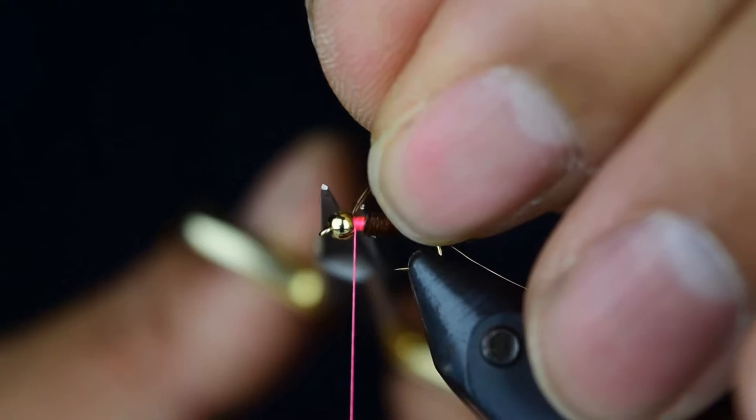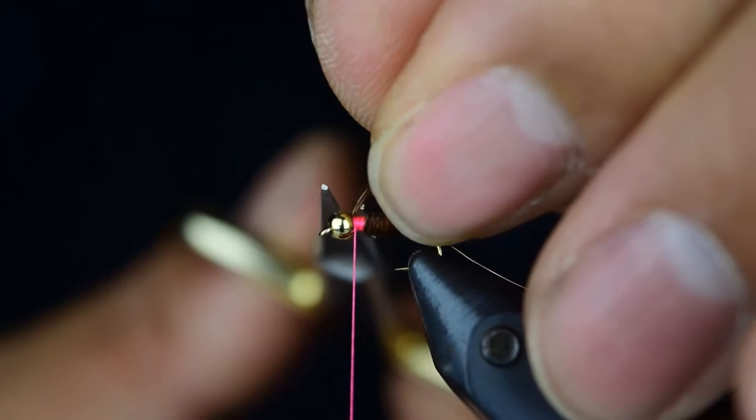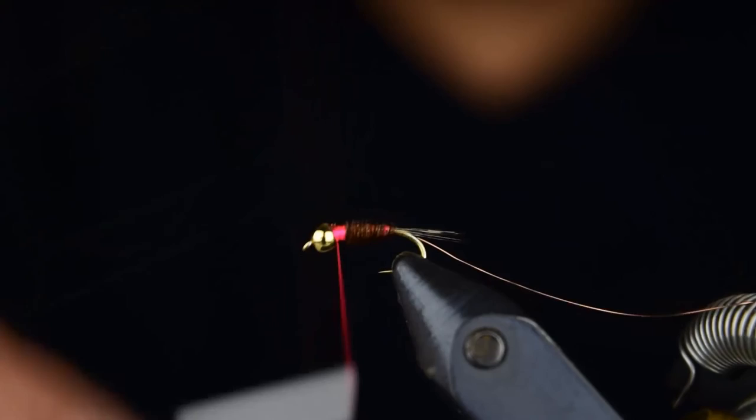We're going to go ahead and take our scissors and cut away this excess here. We're just going to wrap a couple more times to get those butt ends underneath the bead and we're going to come back to right about there.